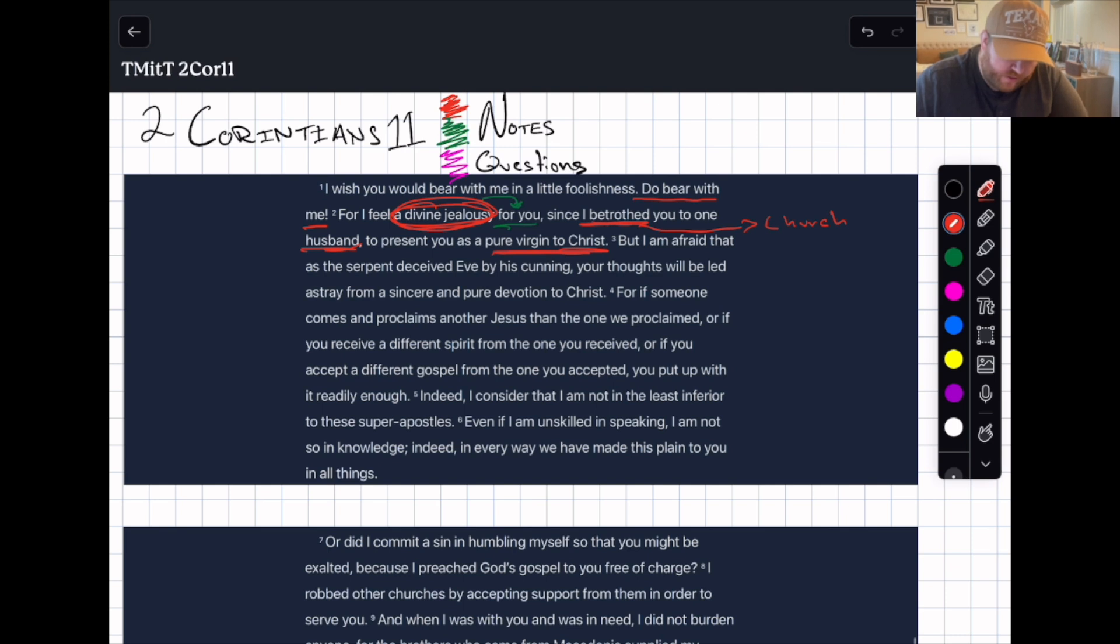But I'm afraid that as the serpent deceived Eve by his cunning, your thoughts will be led astray from a sincere and pure devotion to Christ. Paul shares his fears here that just as in the garden the serpent deceived Eve by his cunning, he's afraid your thoughts will be led astray from sincere and pure devotion to Christ. His worry is that the bride, the church, is going to be pulled away.